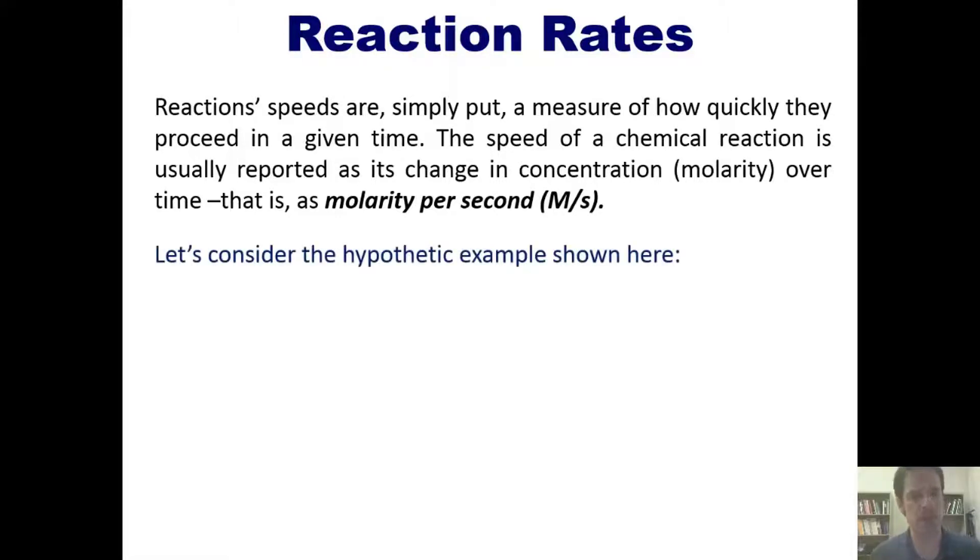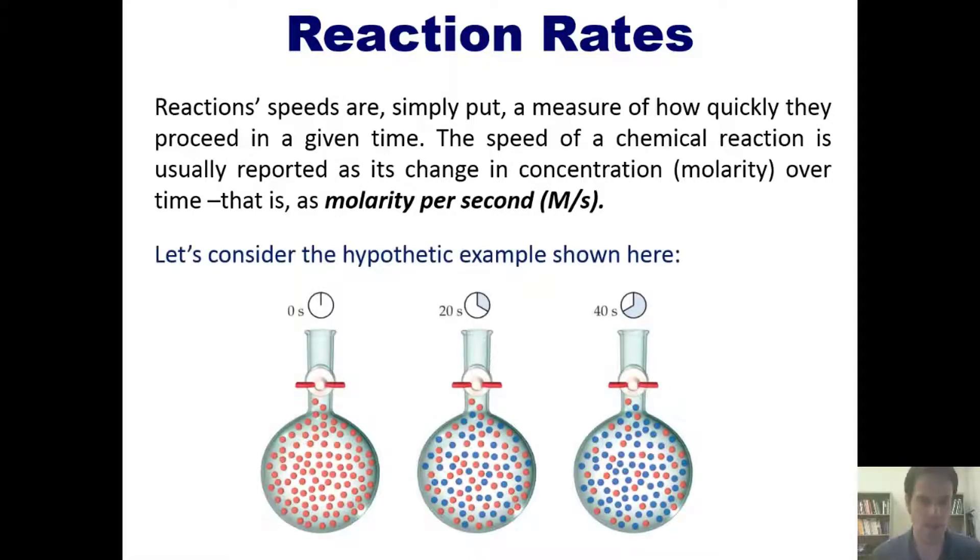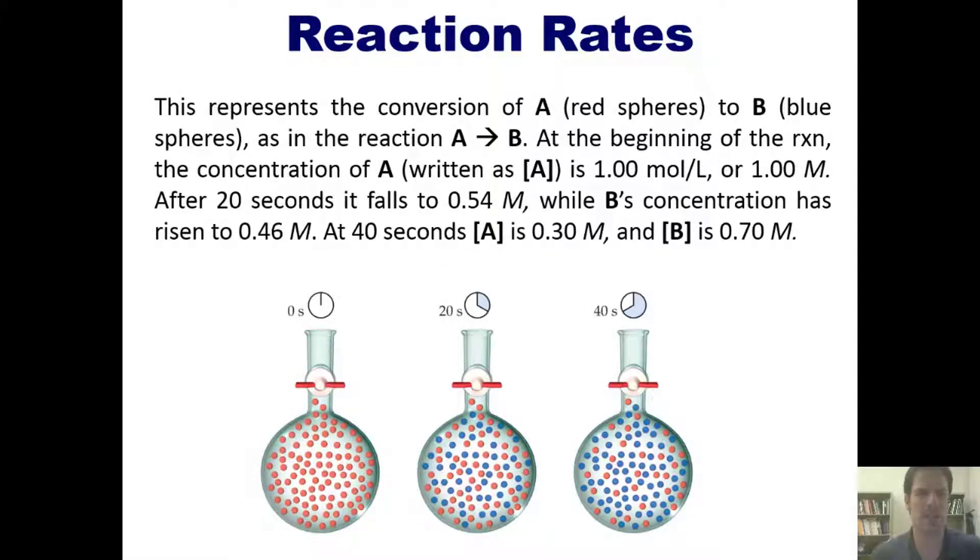Let's take, for instance, this hypothetical example shown here. Now, this represents the conversion of A, which are reactants, or red spheres, to B, which are products, or blue spheres, in the reaction A converting to B.